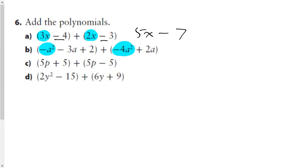In the second question, a negative a-squared combines with a negative 4a-squared — keep your a-squared. Negative 1 and negative 4 make negative 5. Your negative 3a added to your positive 2a makes negative 1a, which we write as just negative a. Finally, your positive 2 constant does not combine with anything else, so we leave it as positive 2.